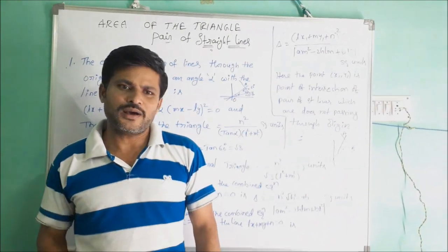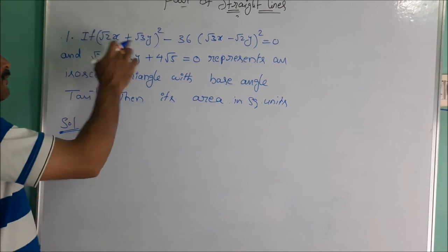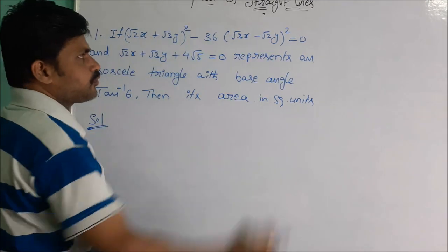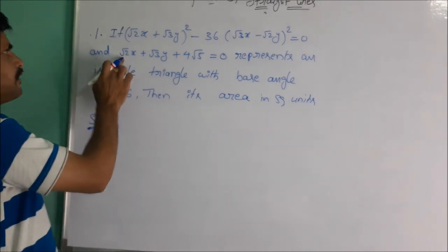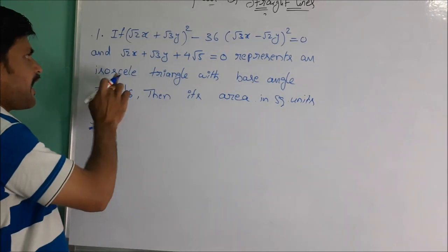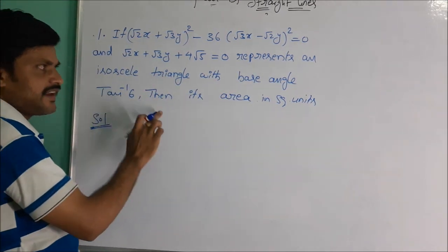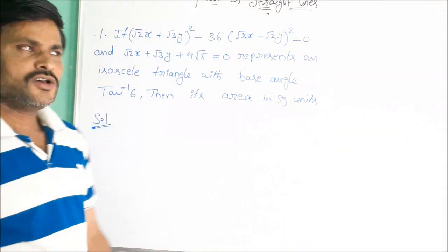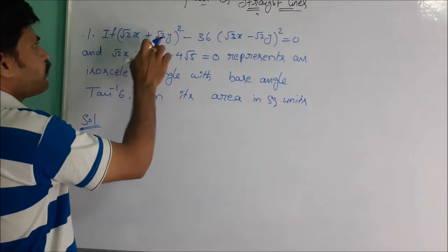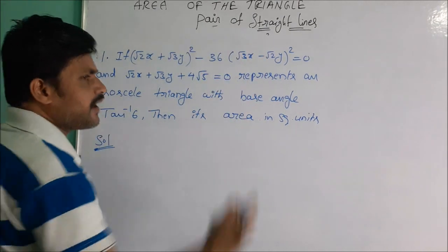Now we go to the problems. The first problem: if (√2x + √3y)² − 36(√3x − √2y)² = 0 and √2x + √3y + 4√5 = 0 represents an isosceles triangle with base angle tan⁻¹(6), find its area in square units. We observe the combined equation is (√2x + √3y)² − 36(√3x − √2y)² = 0.